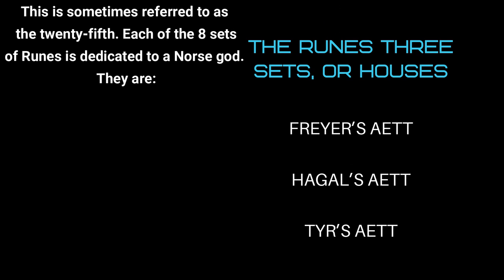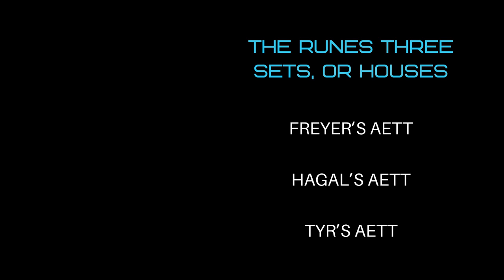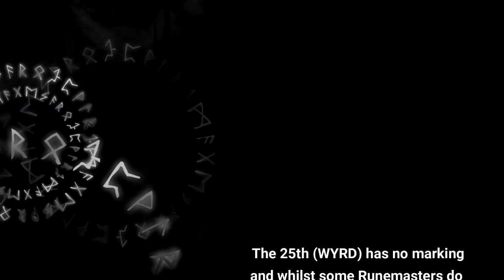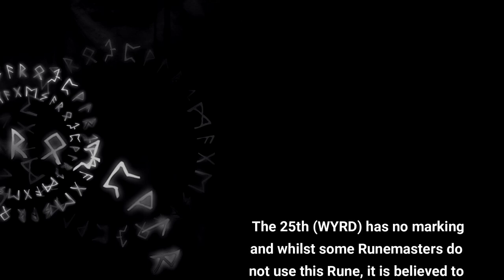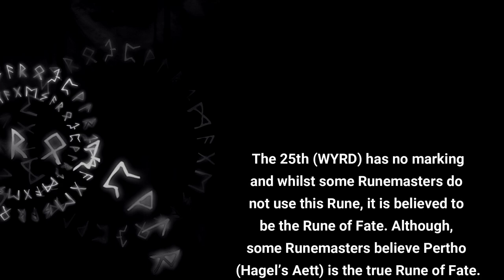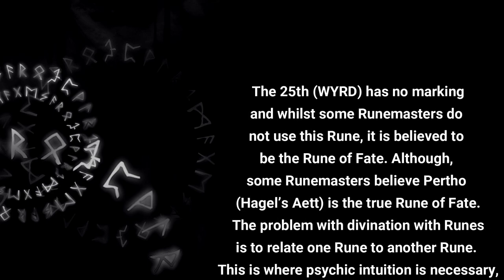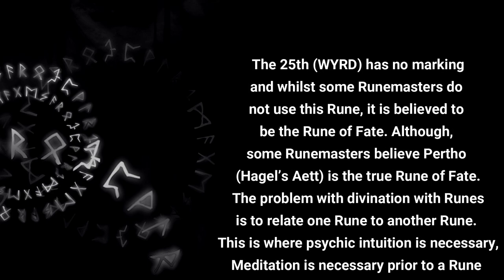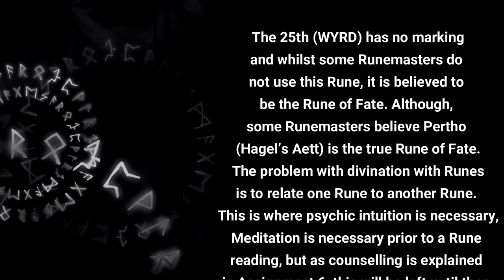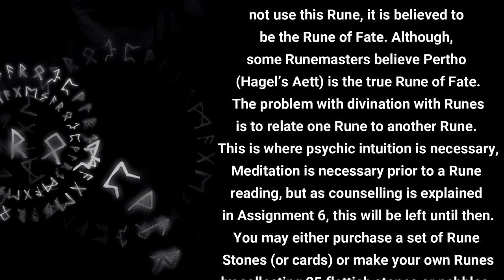Each of the three sets of runes is dedicated to a Norse god: Freyja's aett, Hagal's aett, and Tyr's aett. The 25th rune has no markings, and while some runemasters do not use this rune, it is believed to be the rune of fate — although some runemasters believe Perthro, Hagal's eighth, is the true rune of fate. The problem with rune divination is to relate one rune to another, and this is where psychic intuition is necessary.